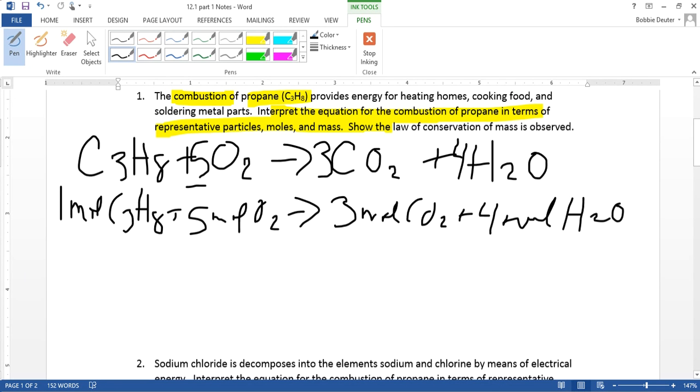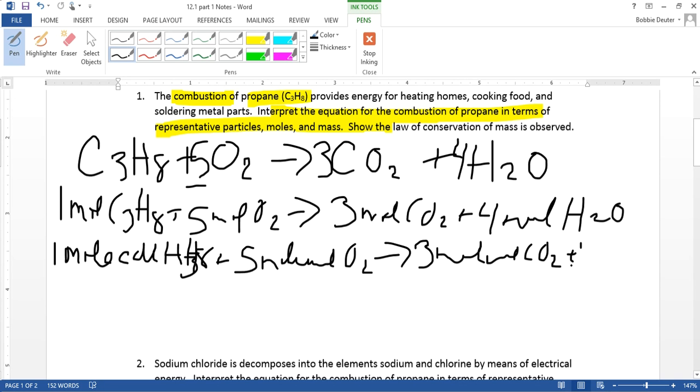That's not so bad. Let's use representative particles. So if we look at all these, we're going to have different representative particles. Molecules are for covalent compounds, formula units are for ionic, and simple atoms are just atoms. In this case, we have all covalent compounds, so they're all going to be molecules. So we write: one molecule of C3H8 plus five molecules of O2 to produce three molecules of CO2 plus four molecules of H2O. Sorry for the handwriting.